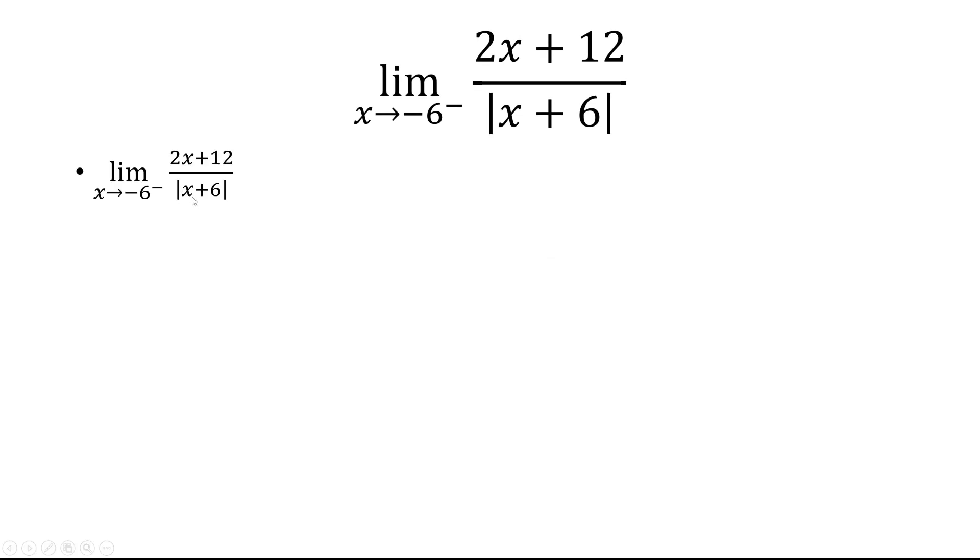Now when evaluating the absolute value, we use a definition. So the absolute value of x plus 6 is equal to x plus 6 if x is greater than or equal to negative 6, and it's equal to negative quantity x plus 6 if x is less than negative 6.